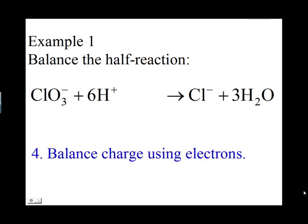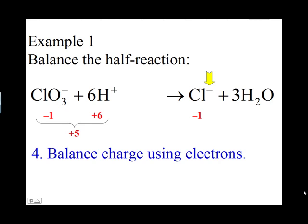The final step is to balance the net charge using electrons. The ClO3⁻ has a charge of negative one, and the six H+ ions have a charge of positive six, giving a net charge on the left side of positive five. On the right side, Cl⁻ has a charge of negative one and water has a charge of zero, giving a net charge of negative one.